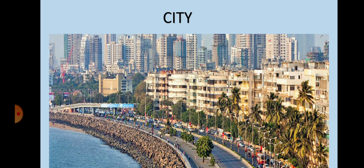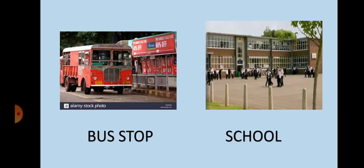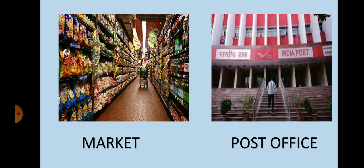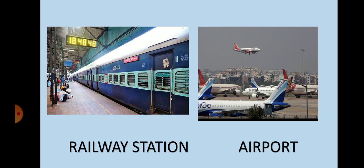Look here at the picture of a city. It is looking so crowded and it has tall buildings. So many people live here — it is very thickly populated. In the cities there are bus stops, schools nearby. You have markets, post offices, railway stations, and airports nearby in the cities.